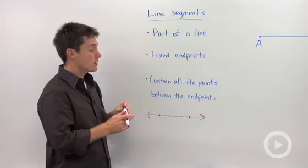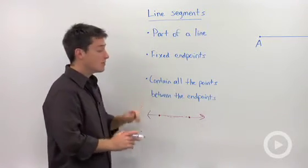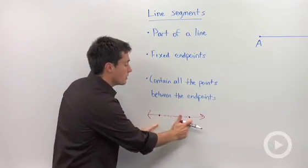So a line segment is only part of a line, and it has fixed endpoints, and by definition, the line segment contains all the points that are in between your endpoints.